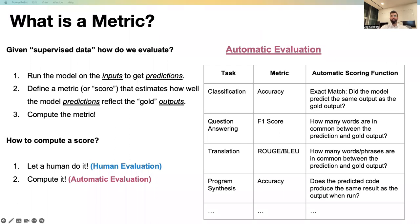Under the automatic evaluation, we have many metrics that are commonly used in machine learning, and this depends on the task at hand. For example, if we are looking at a classification-based task, say sentiment analysis, where we want to predict the sentiment of a text as being positive or negative, we can use accuracy to assess whether the model predicted the same output as the gold output.